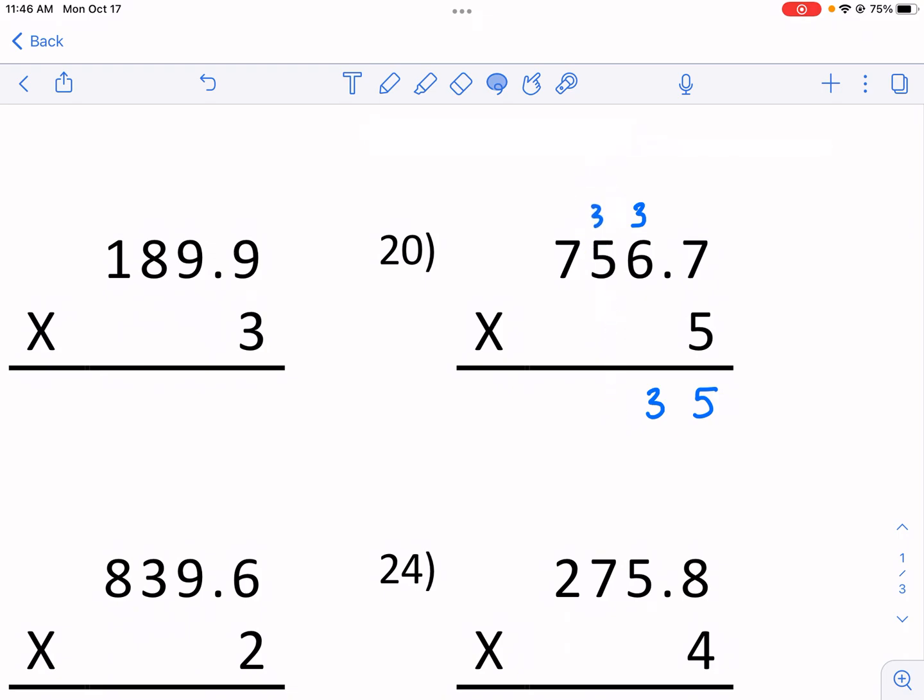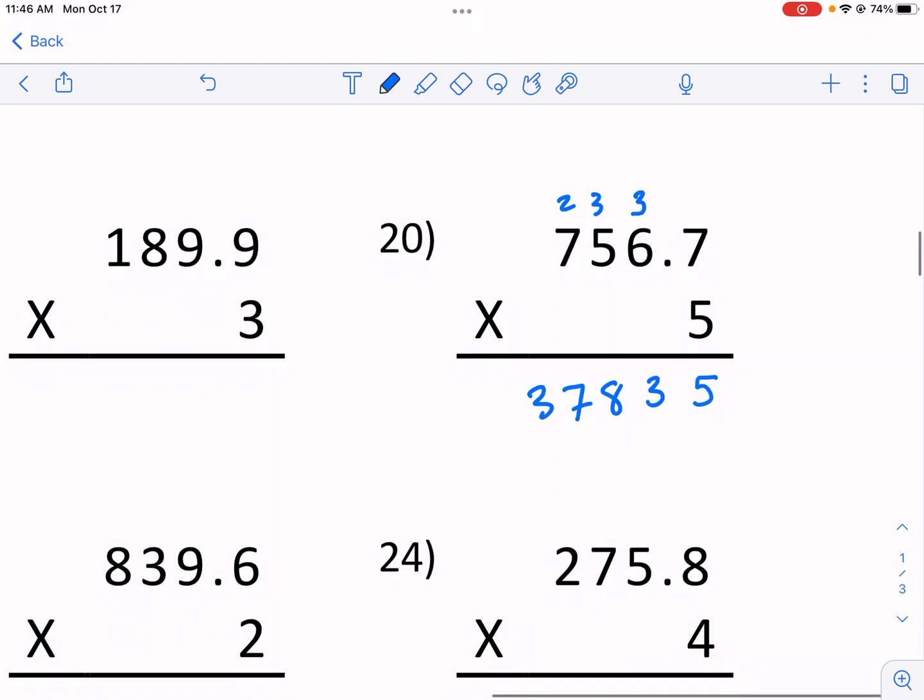6 times 5 is 30 plus that 3, 33. Carry that 3 from the 33. Now I have 5 times 5 is 25 plus 3 is 28. And now I have 7 times 5 is 35 again plus 2 this time, 37. Now it looks like a huge number, 37,000, but that's not what it is.